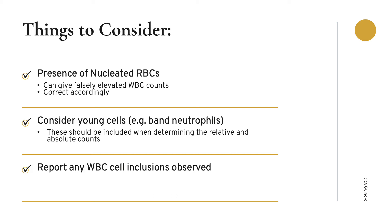For other white blood cell types, young lymphocytic or monocytic cells should be reported at their different stages — for example, pro-lymphocytes, lymphoblasts, pro-monocytes, or monoblasts. Immature eosinophils and basophils are not usually characterized; they are just called immature eosinophils or basophils. For neutrophilic cells, the presence of increased numbers of bands or cells younger than bands in the peripheral blood is known as a left shift. Lastly, you have to report any WBC cell inclusions observed, as this may indicate various pathologic causes.